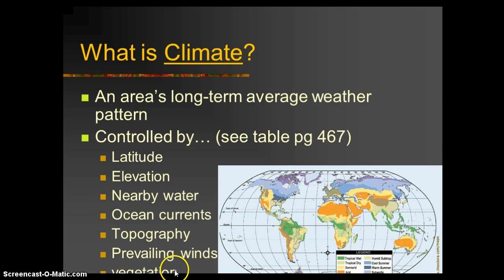Vegetation is also a climate control, which surprises some students. Forest versus desert or barren land makes a difference because vegetation absorbs sunlight and converts it into glucose — a stored form of energy — rather than immediately converting it into heat. Pavement or desert sand, by contrast, absorbs sunlight and converts it into heat immediately. So you're literally cooler in a forest not just because of shade, but because the plants are taking in energy and converting it to glucose rather than releasing it as heat.